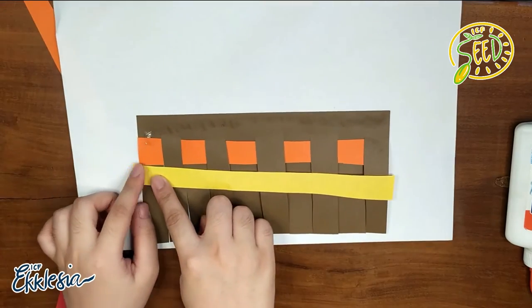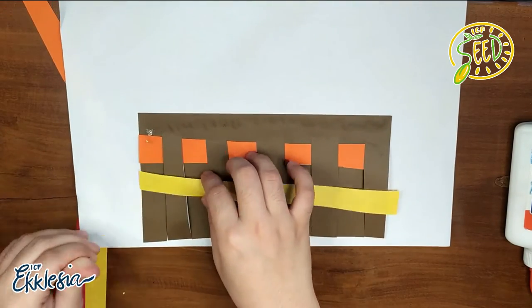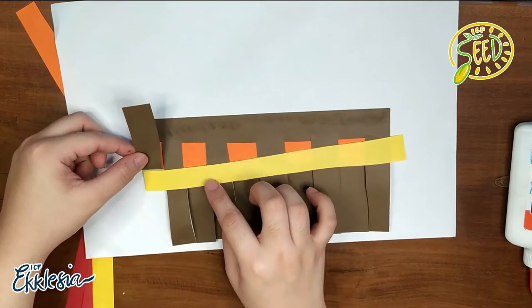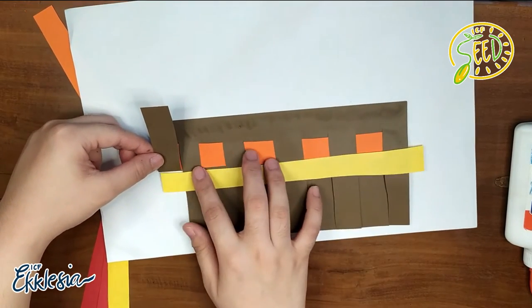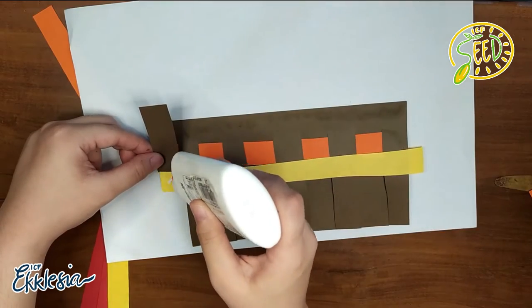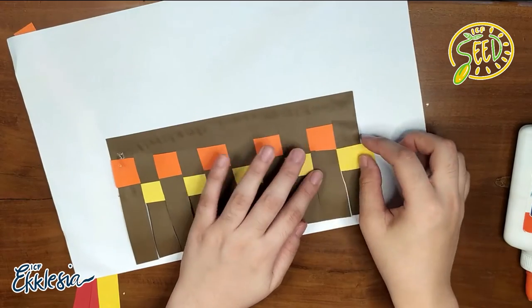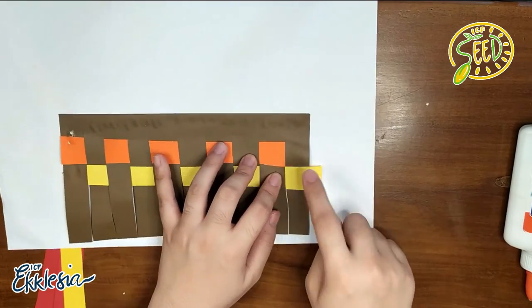Ganun din ang gagawin natin sa ibang colored paper. Pero this time, doon tayo magsisimula naman sa Under. Anong lalagay natin? Glue. Very good. Ganun lang ulit. Hanggang maging parang alternate na siya.